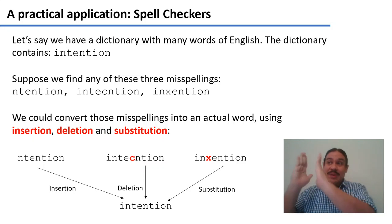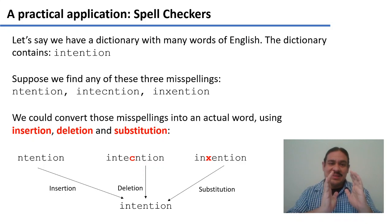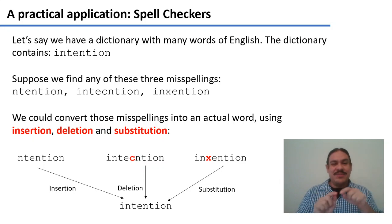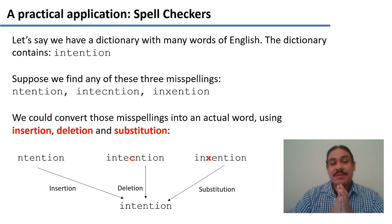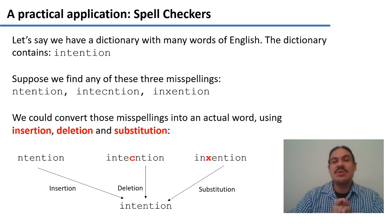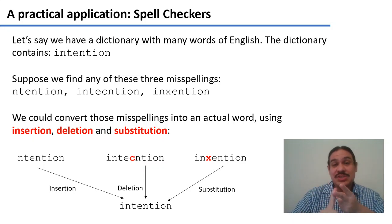Suppose we have this dictionary file and then we get some input text, and the person who wrote it wrote 'intenttion' in one paragraph, 'intentiion' further down, and 'inxenction' in the final paragraph. None of those three words exist in English, so we need to find the words closest to them. We could do this by performing simple operations like insertion of letters, deletion of letters, and substitution of letters.